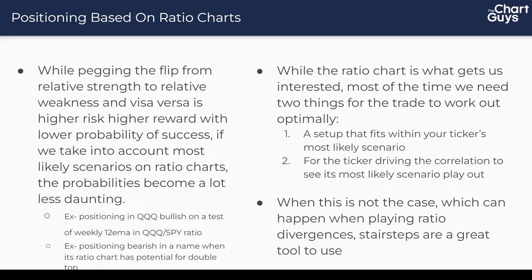Positioning based on ratio charts while pegging the flip from relative strength to relative weakness is higher risk, higher reward, with lower probability of success. However, if we take into account most likely scenarios on the ratio charts, the probabilities become a lot less daunting. For example: positioning bullish in QQQ on a test of the weekly 12 EMA in the QQQ/SPY ratio, or positioning bearish in a name when its ratio chart has the potential for a double top. Using these ratio charts really shifts the odds for nailing these rotations.